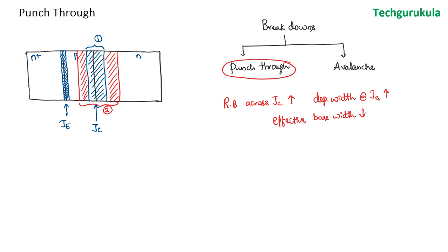If you keep on increasing the reverse bias at the collector junction, there would be a point where the depletion region at the collector junction would punch through the base and make the effective base width zero, at which point we would not have a base at all in the BJT. As we increase the reverse bias, the depletion width would increase — let's call this the third case. When the depletion region at the collector junction reaches the emitter junction depletion width, the amount of current that flows would increase rapidly, and hence we call this a breakdown. In this case, as we are not having any base, we lose the transistor action at this point.